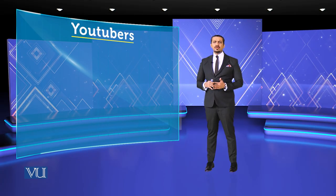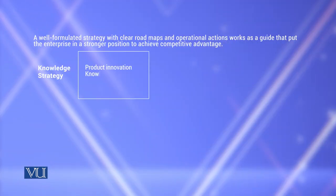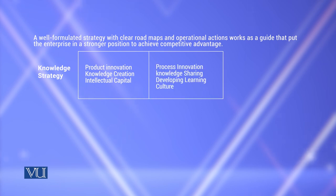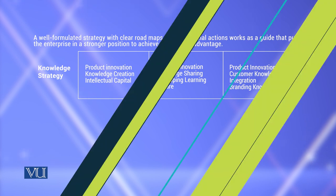Even now there are people who finish three books a day, but who are they giving them to? Low-content people have become YouTubers. The knowledge reaching you is coming from low-content people. High-knowledge people do not like this accessibility. Both are wrong — great scholars should come forward in some way. In knowledge strategy we see: product innovation, knowledge creation, intellectual capital, process innovation, knowledge sharing, learning culture, customer knowledge integration, and branding knowledge — how can we brand our knowledge?